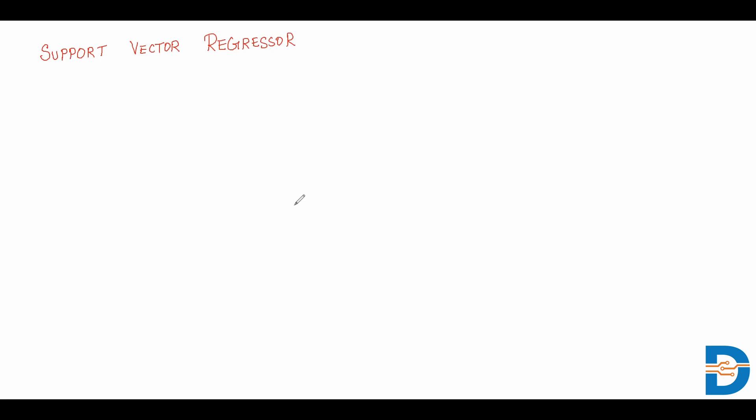Hello everyone, a warm welcome to you all. In today's video we are going to discuss support vector regression. Support vector machine is a supervised learning technique which can be used for both classification and regression. When used for a regression task, it is called a support vector regressor.